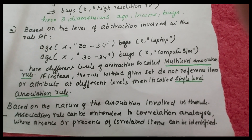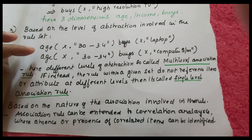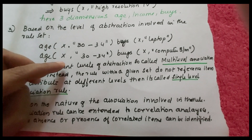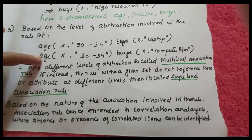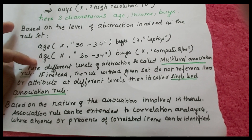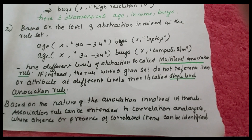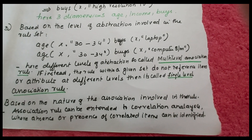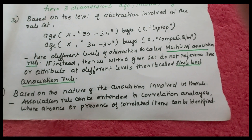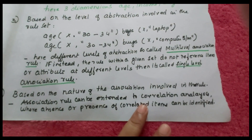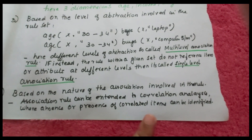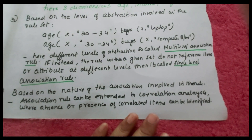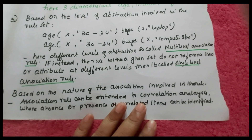The third criterion is based on the level of abstraction involved. For example, 'age 30 to 34 buys laptop' and 'age 30 to 34 buys computer system' represent different levels of abstraction, making this a multi-level association rule. If only one level is involved, it is a single-level association rule. Additionally, association rules can be extended to correlation analysis, where the presence or absence of correlated items can be identified.